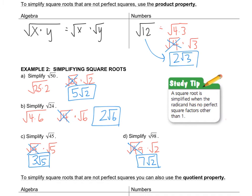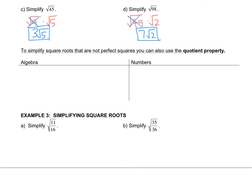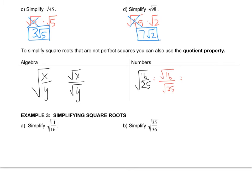Just like the product property, you can also use a quotient property. Quotient has to do with division, whereas product has to do with multiplication. If you have the square root of x over y all under the radical, you can split it up as the square root of x divided by the square root of y. For example, the square root of 16 over 25 equals the square root of 16 over the square root of 25, which is 4 over 5. But they don't always both reduce — one of them should if your goal is to use the quotient property.